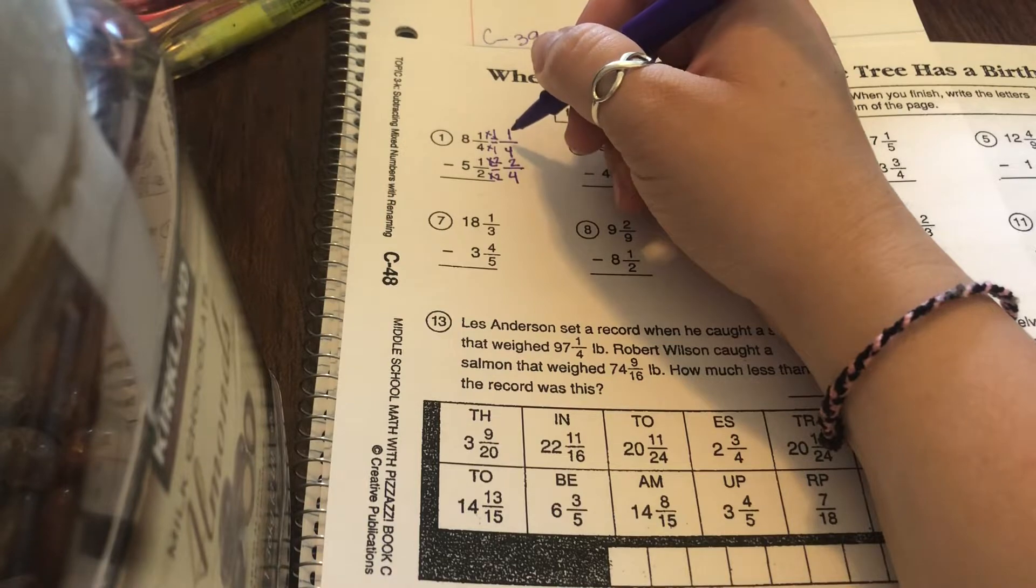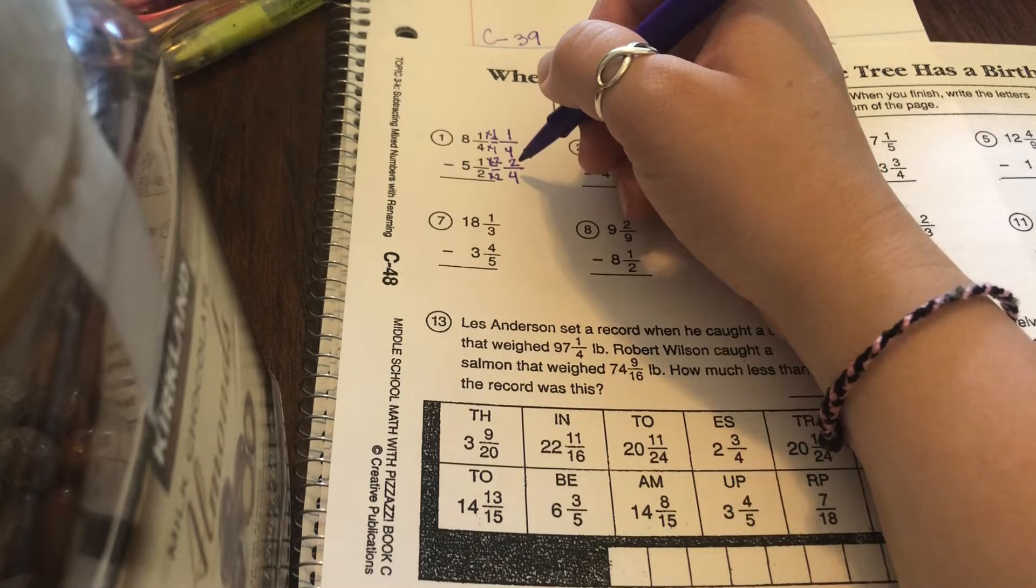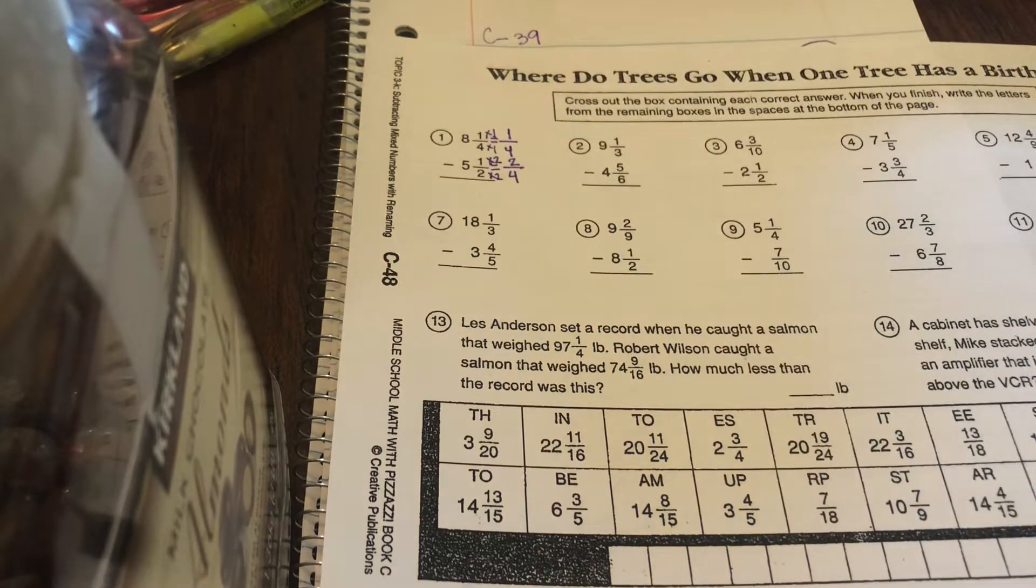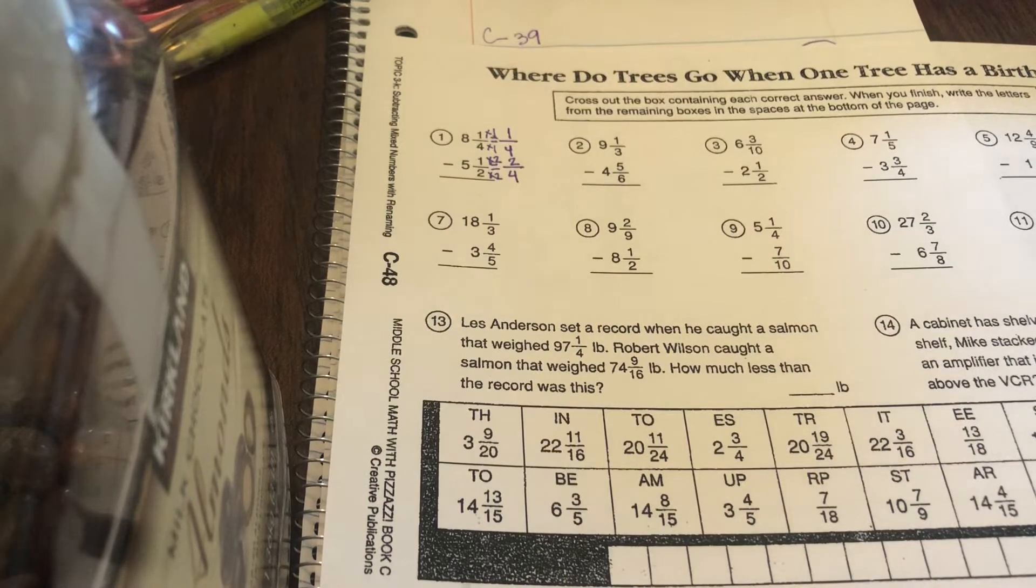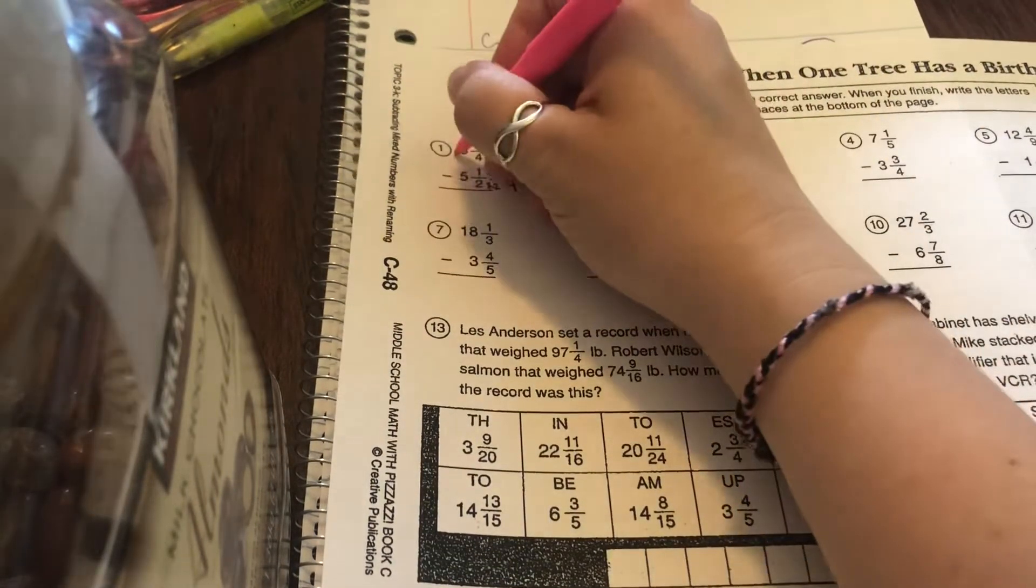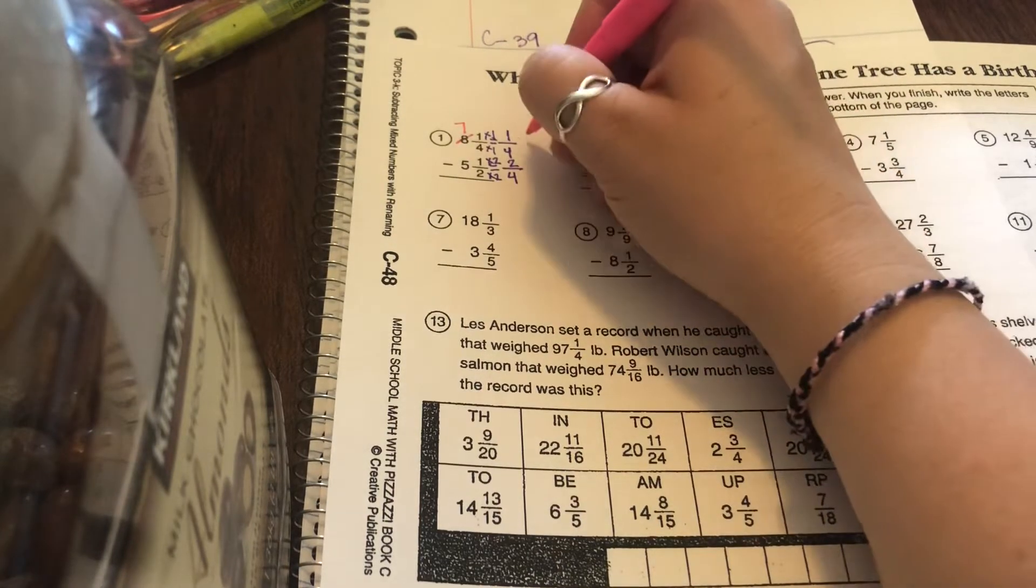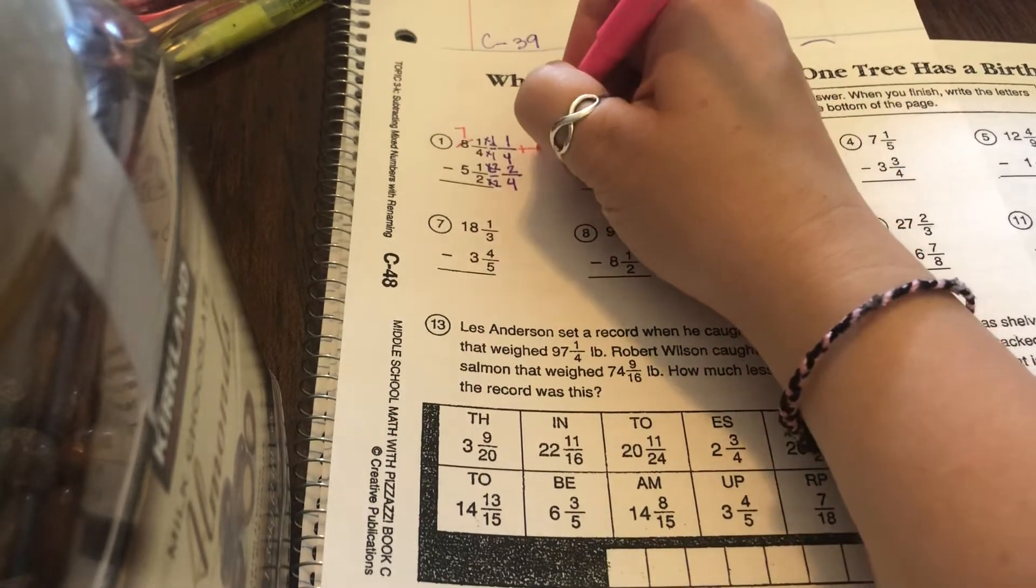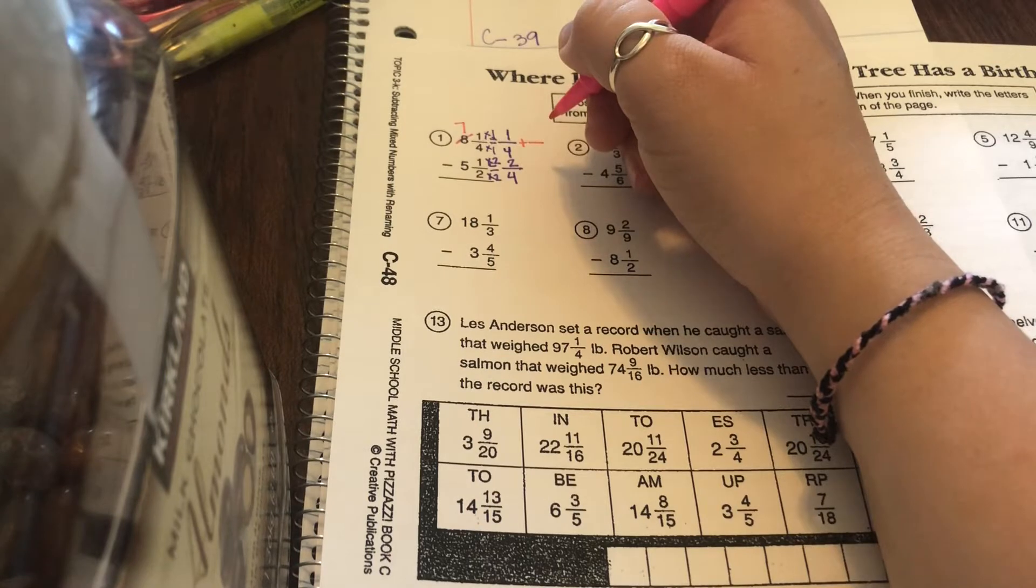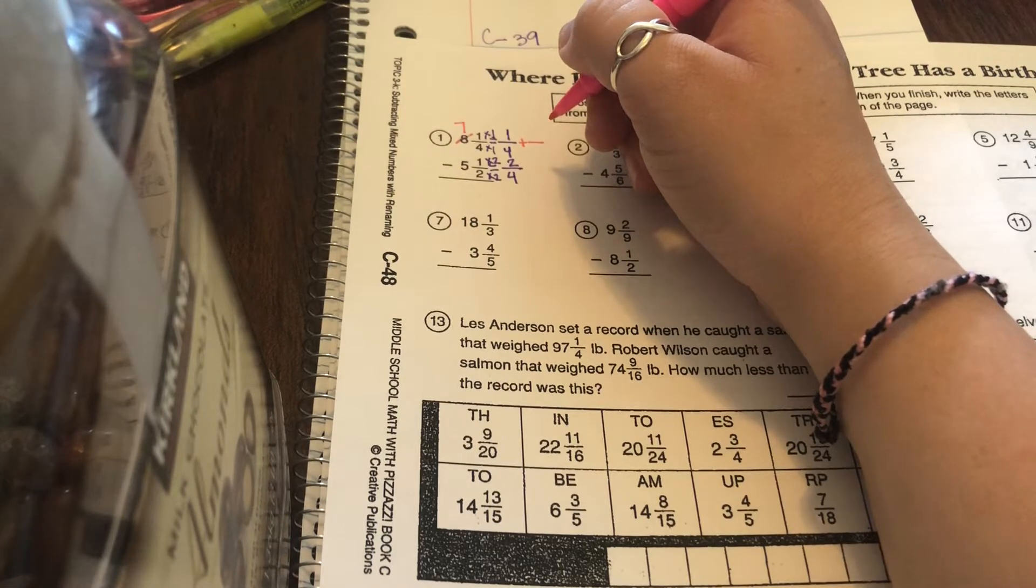So you take the numerators 1 minus 2. But uh-oh, you can't take away 2 from 1. So I instead need to borrow from the whole number of 8. If I borrow 1, now that becomes a 7, and I'm going to add 1 as a fraction.